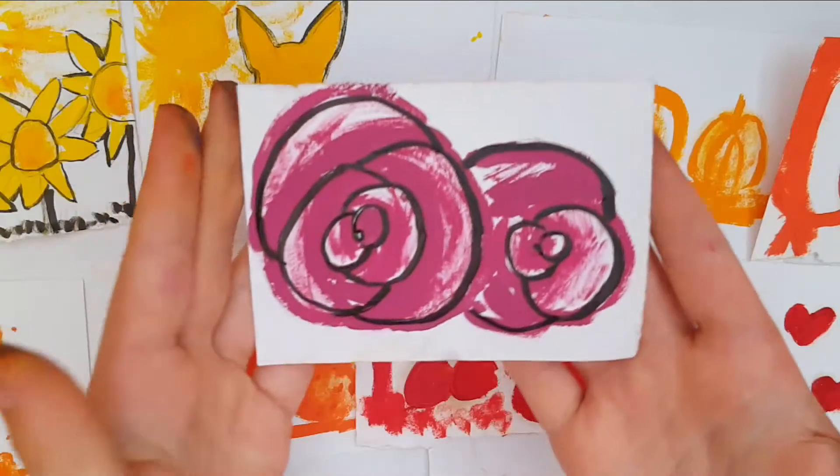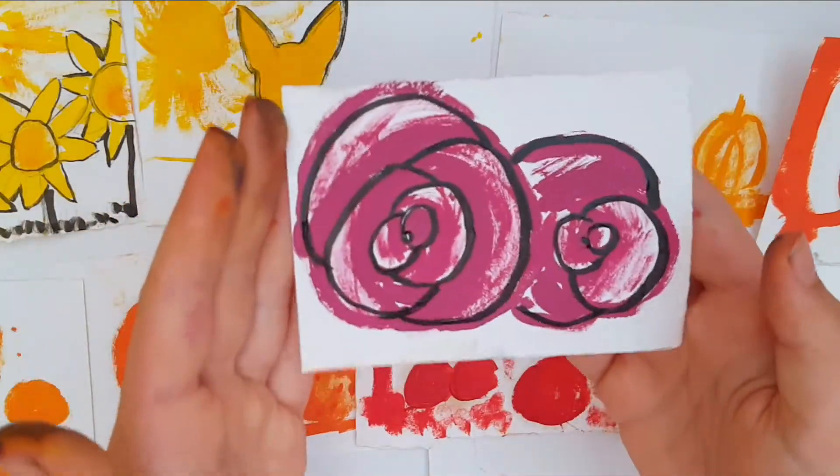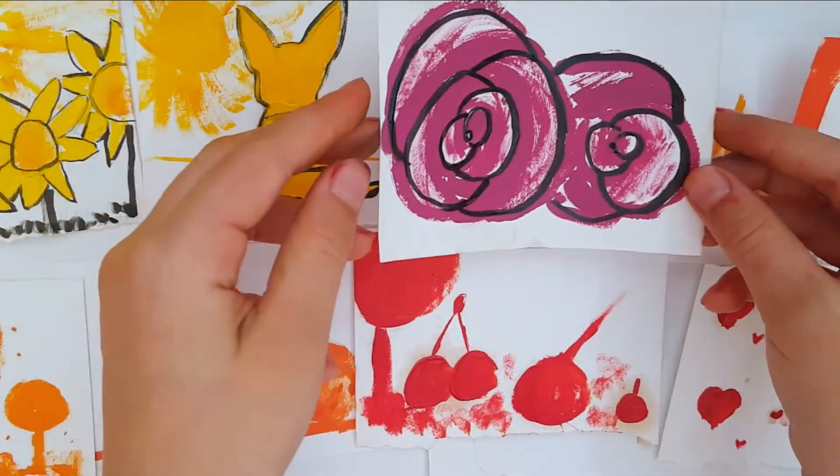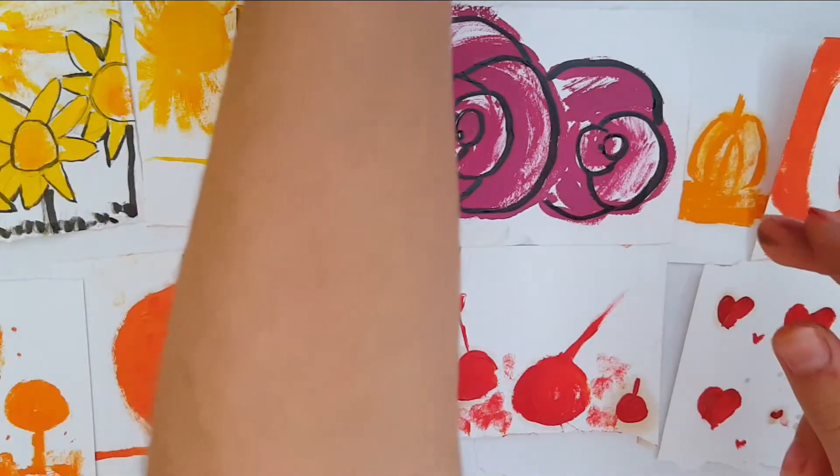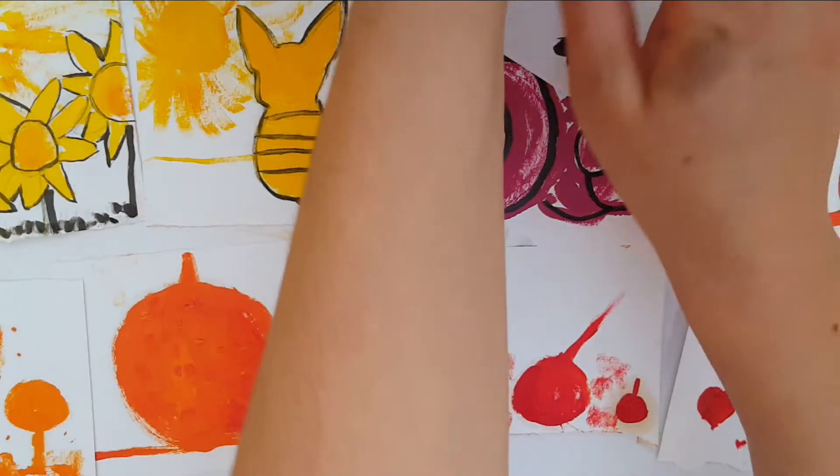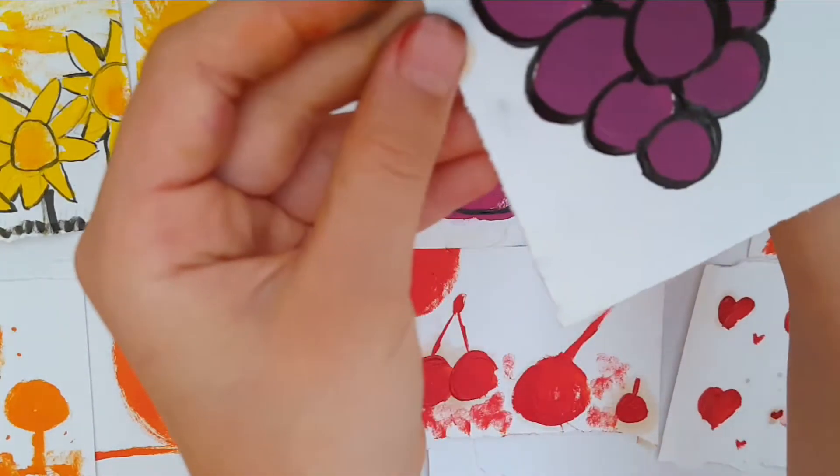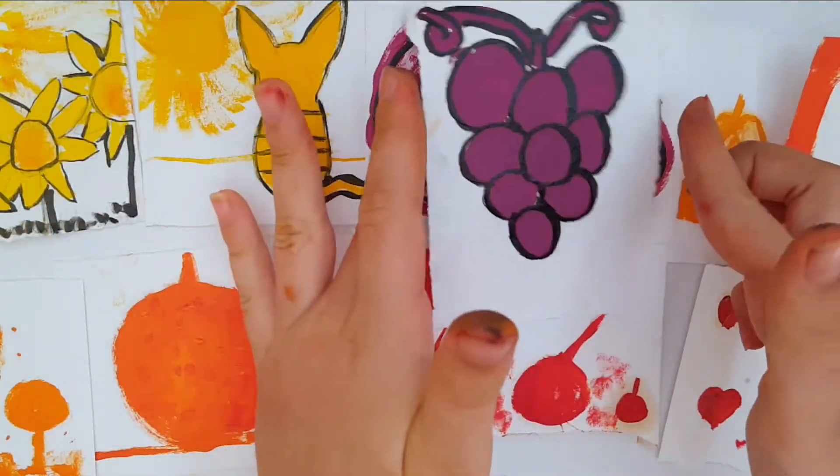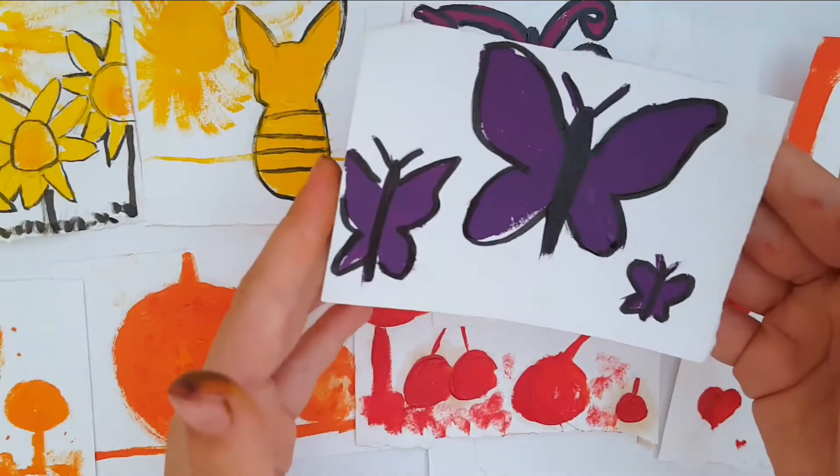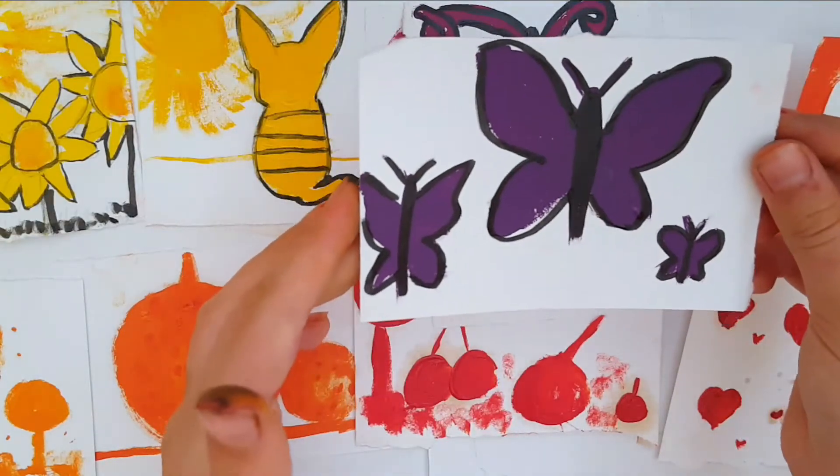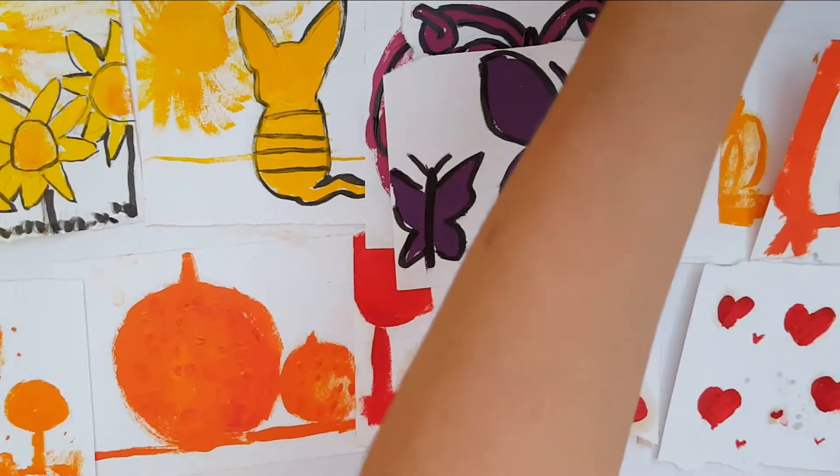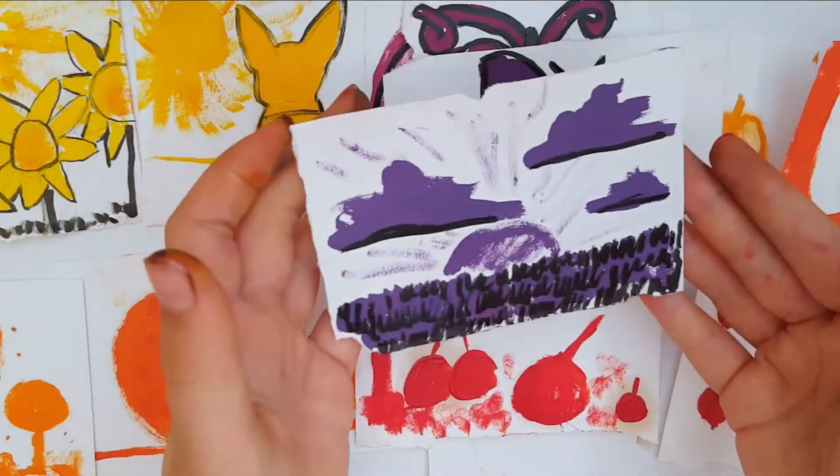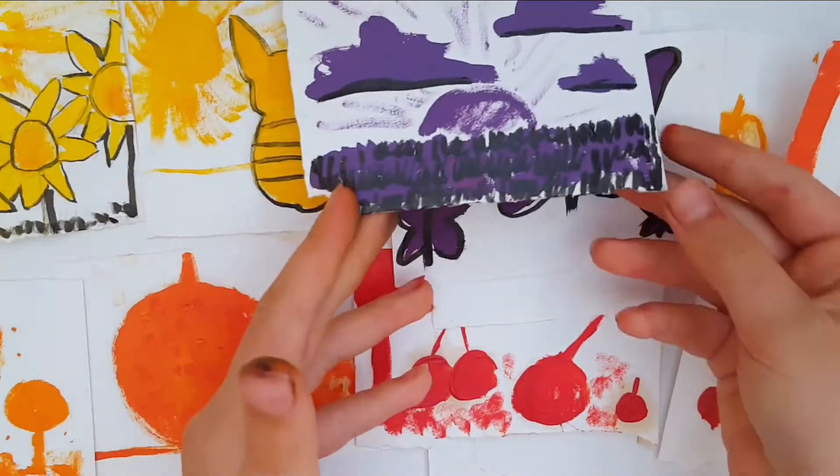Then we have this one. I switched to gouache and it dried really quick. So we have the flowers, and then we have one of my favorites, the grapes. Then we have butterflies which I also really like. Then we have the sunset. I really really like all of these purple ones.